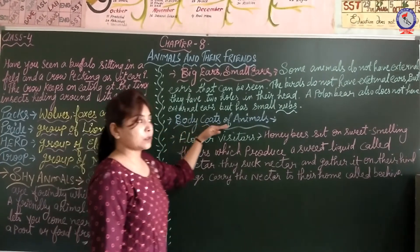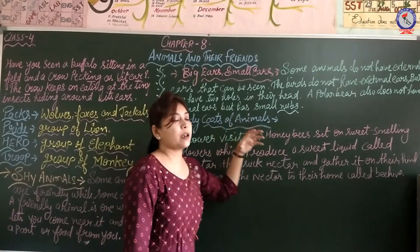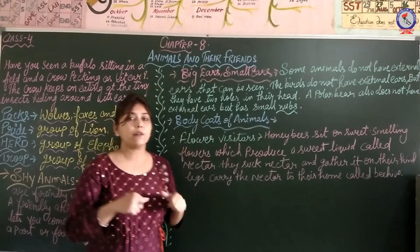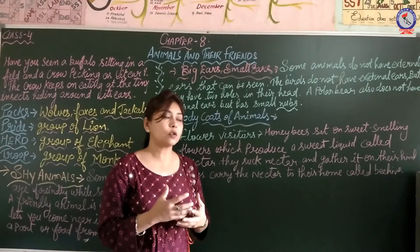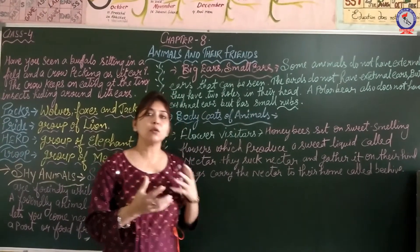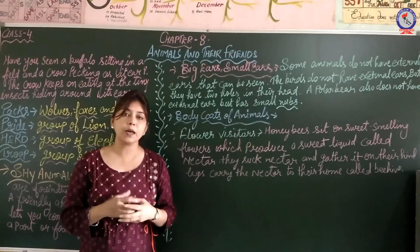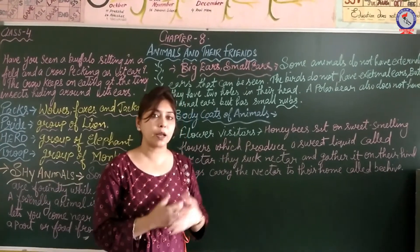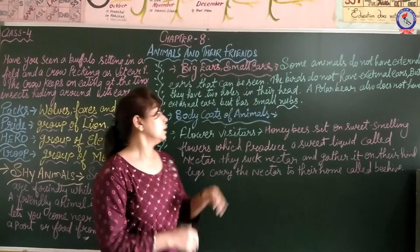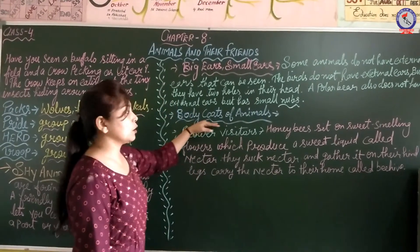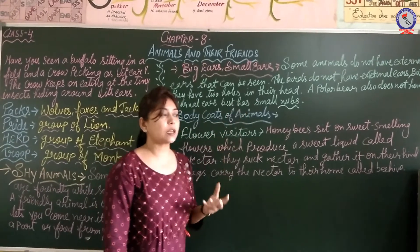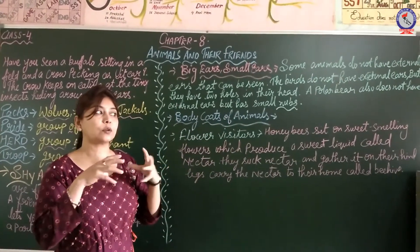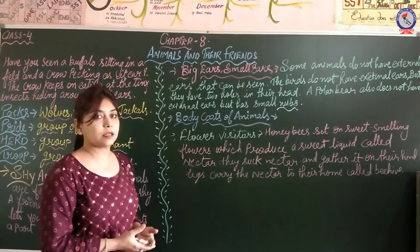Body coverings of animals means the covering on their body, which keeps them warm, protects them from the cold, and protects them from many things. For example, birds' feathers protect them from cold and rain, and protect them from other climates.